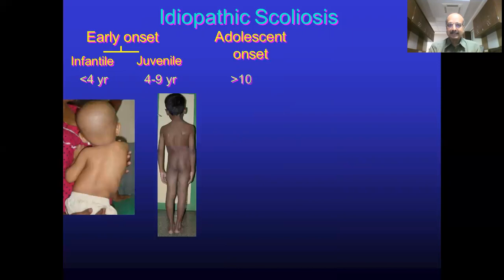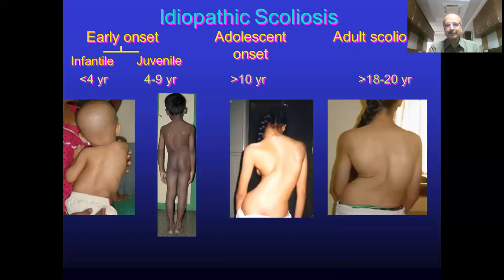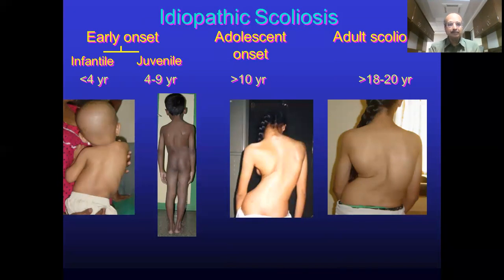The age of onset is the next important factor. Idiopathic scoliosis forms 70% of cases and is divided into early onset infantile idiopathic scoliosis (less than 4 years), juvenile idiopathic scoliosis (4 to 9 years), adolescent idiopathic scoliosis (above age 10) — the highest numbers we see, predominantly in girls — and adult scoliosis, when it is noticed after the age of 18 years.